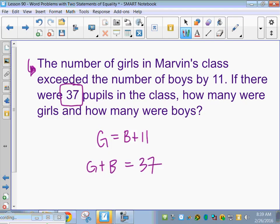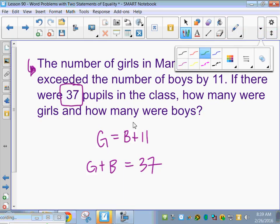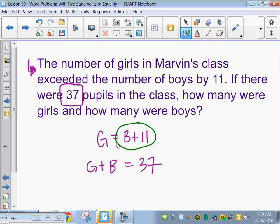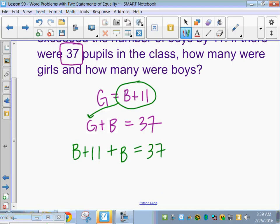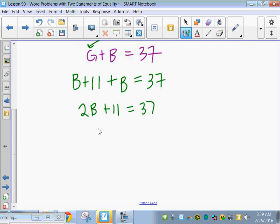Josh, substitution or elimination? Substitution looks way easier here. I'm just going to plug this in for this. Replace the G with B plus 11. B plus B plus 11 equals 37. I did not use parentheses on that only because there's nothing we're multiplying by. So now I can add my Bs. So 2B plus 11 equals 37. Subtract 11 from both sides. So 2B equals 26. Divide both sides by 2. And we get B equals 13 boys.